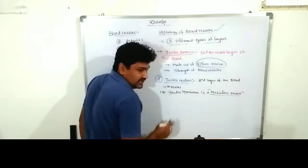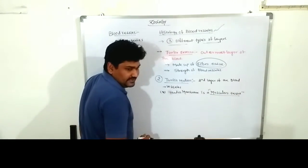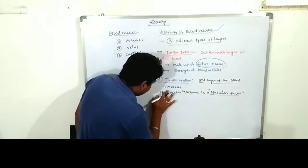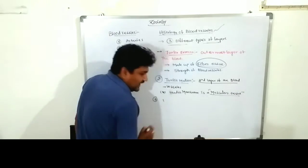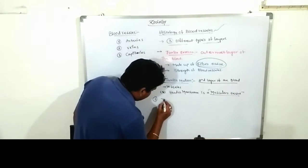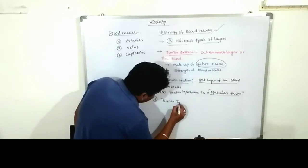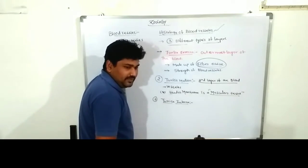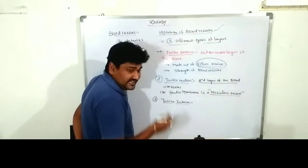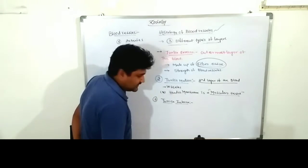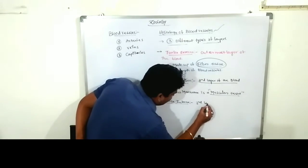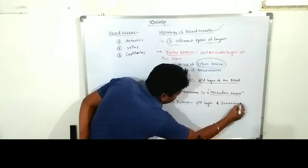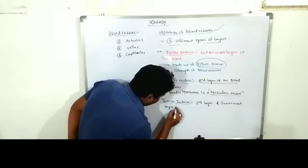Tunica media is located in between tunica externa and tunica interna. The third layer is known as tunica interna. Tunica interna is the innermost layer of the blood vessel, and it is made up of two different types of layers.